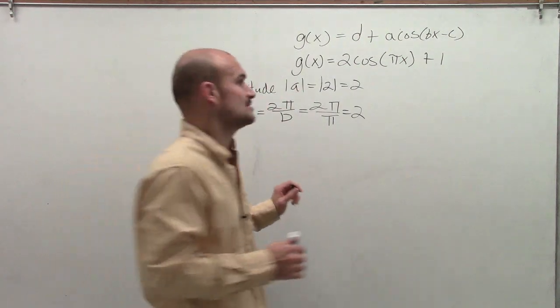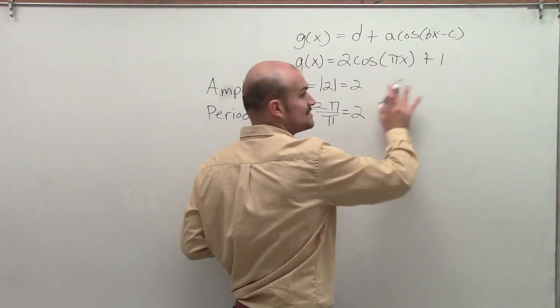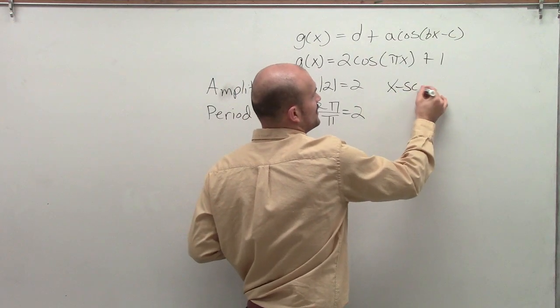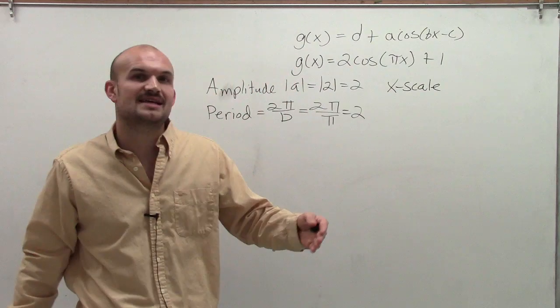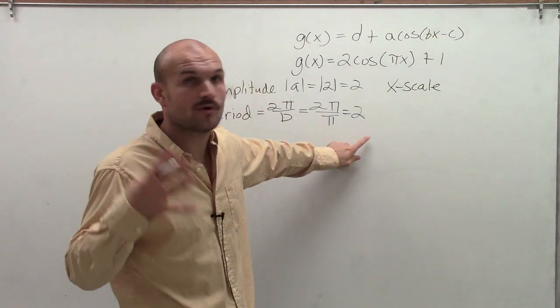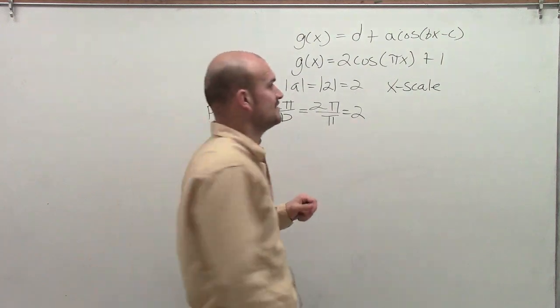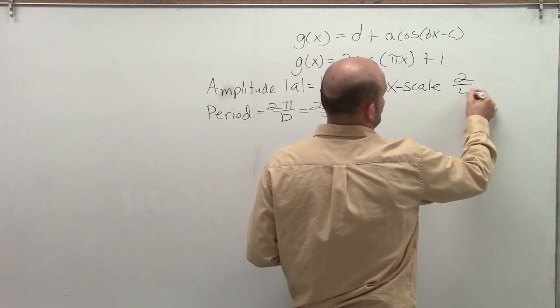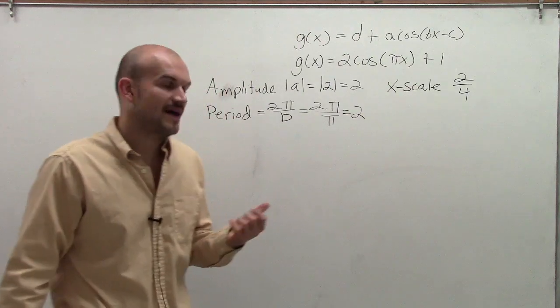So what I'm going to do next is create what we call our x scale. Sometimes I just write critical points, but you can write your x scale. And what that's going to be is how we're going to scale our graph. So the x scale, to scale your graph, since there's four important points, we're going to take our period and divide it by 4.